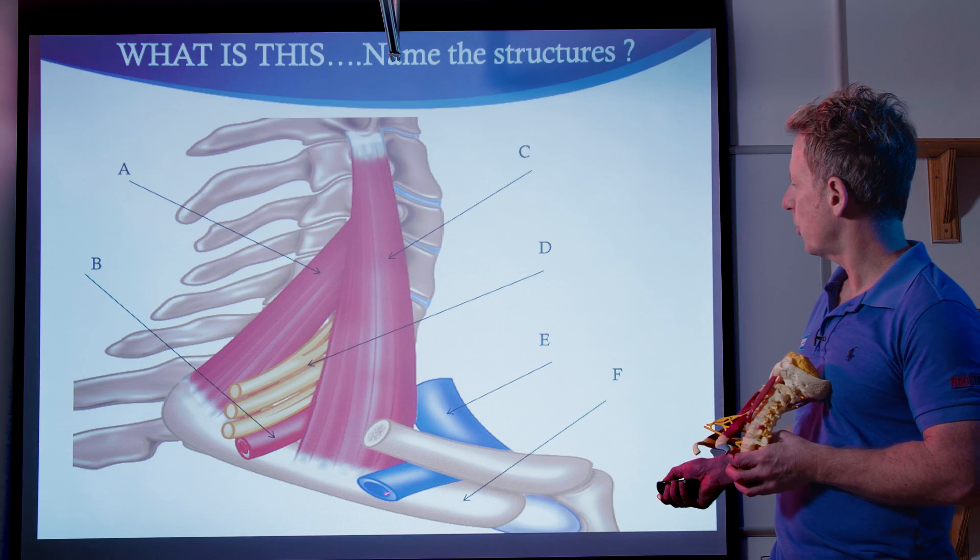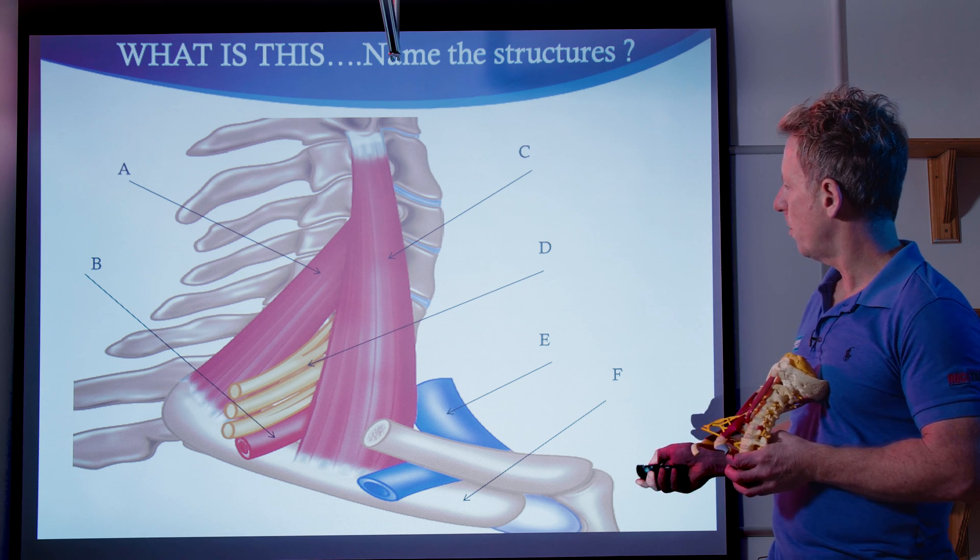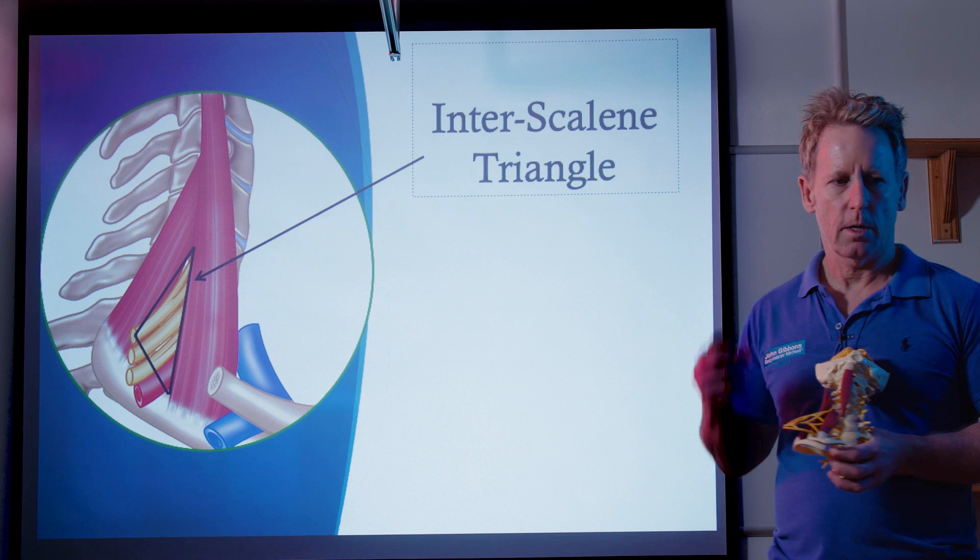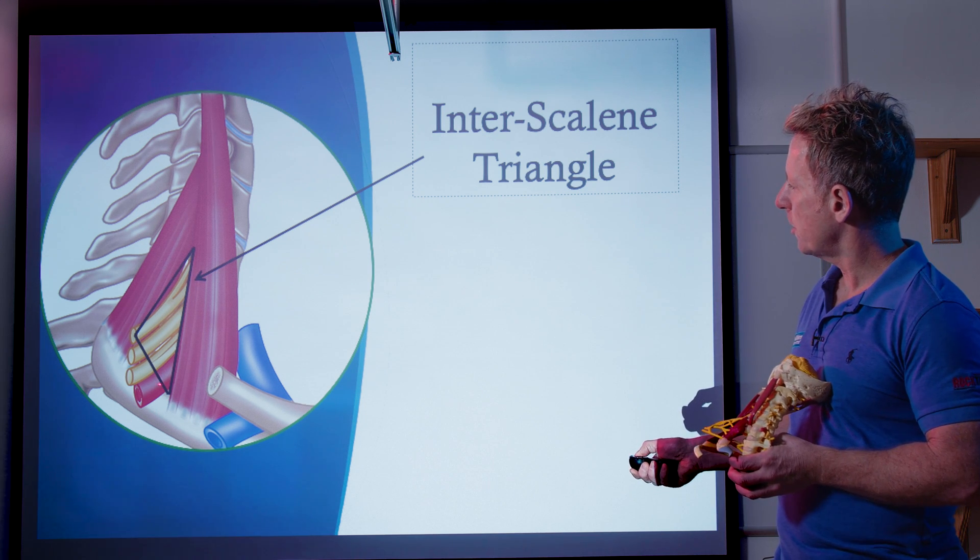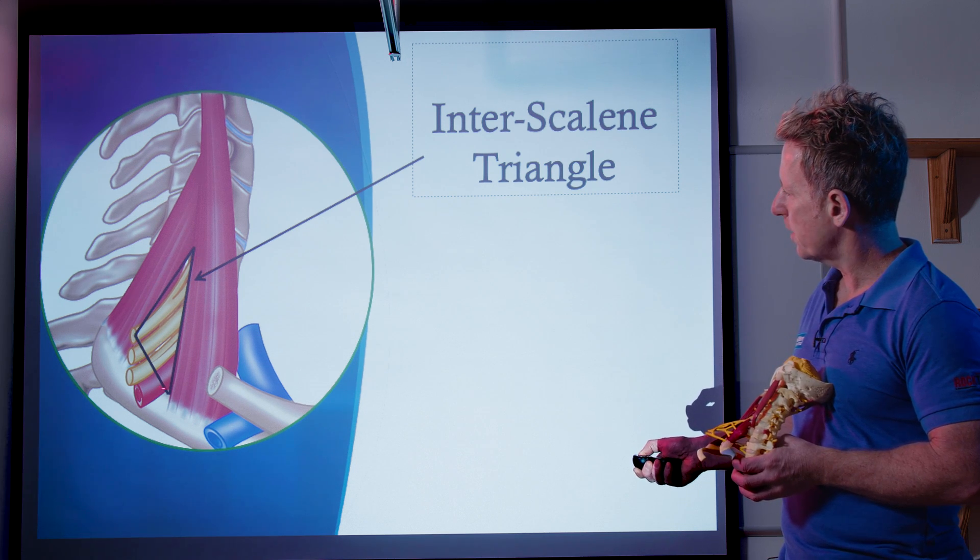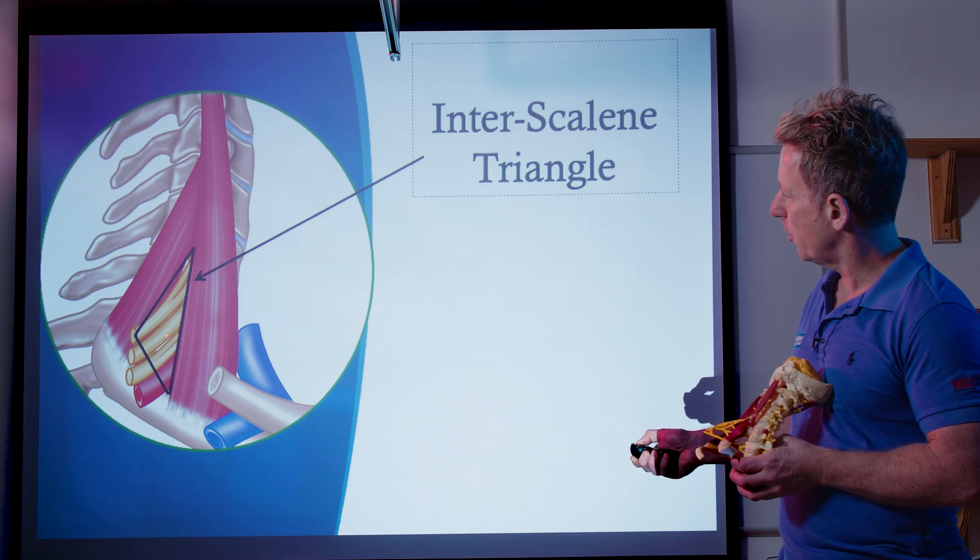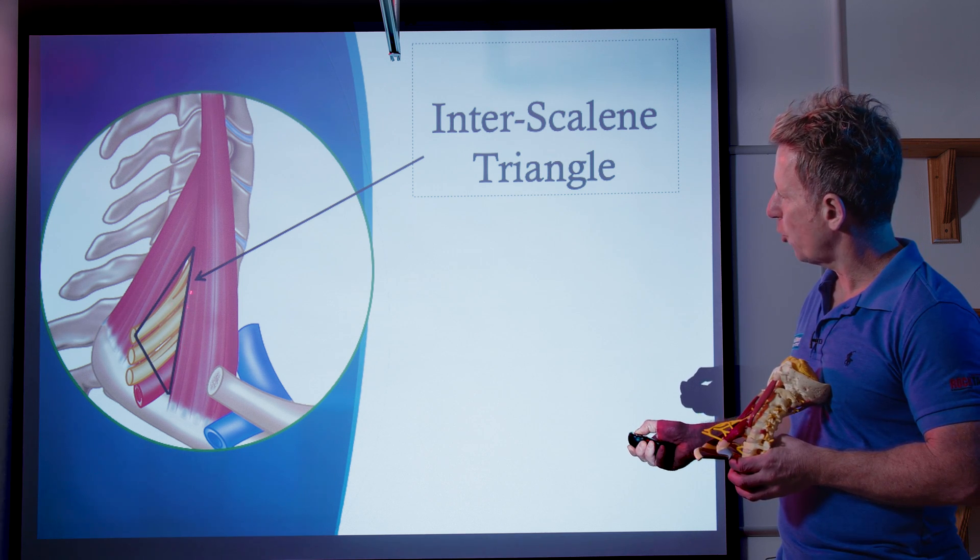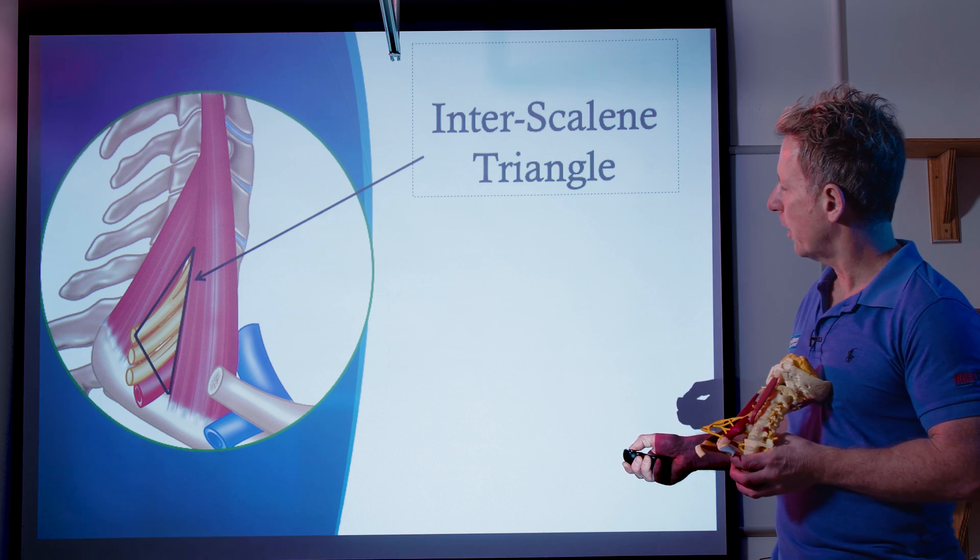Let's just go back so you can see the structures. And then these structures will form the interscalene triangle. So if you have a look in here, you can see that we've got this triangle forming between the anterior mid fibers of the scalene, and the nerves and the artery could get compromised within this space.